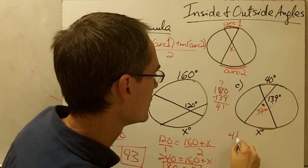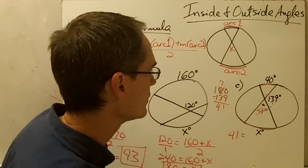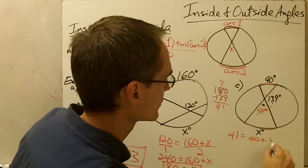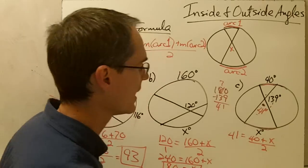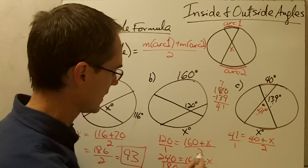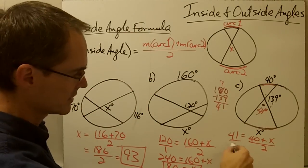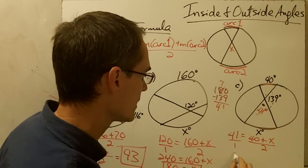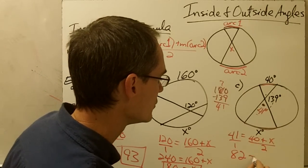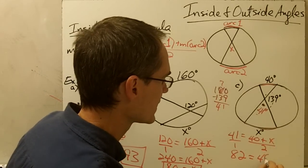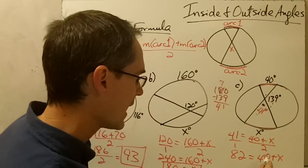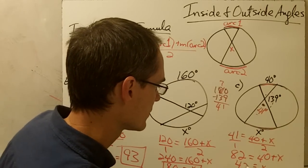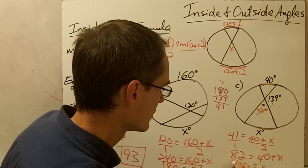So: 41 equals arc 1, which is 40, plus arc 2, which is x, divided by 2. Setting it up as a proportion and cross-multiplying: 2 times 41 is 82, and 1 times 40 plus x is 40 plus x. Subtracting 40 from both sides gives x equals 42.